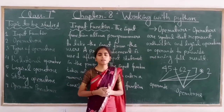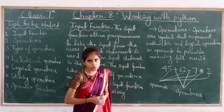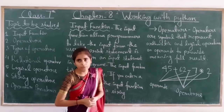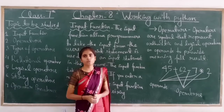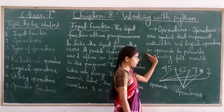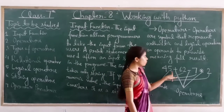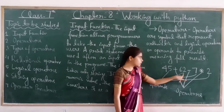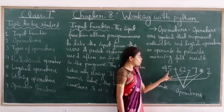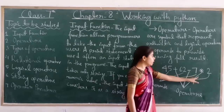Operators are logical symbols which produce meaningful results. For example, here is 45 plus 62 minus 7 into 2. So here 45, 62, 7, and 2 are the operands.